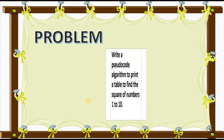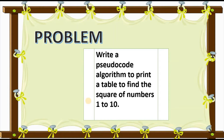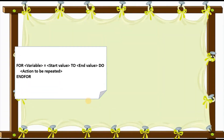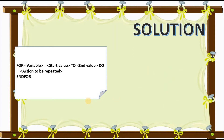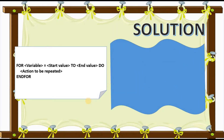Let's proceed to our first example. The problem is to write a pseudocode algorithm to print a table to find the square of numbers one to ten. We already know we will use a for loop because we know the amount of numbers to collect — a start value of one and an end value of ten — after which the program collects nothing additional.